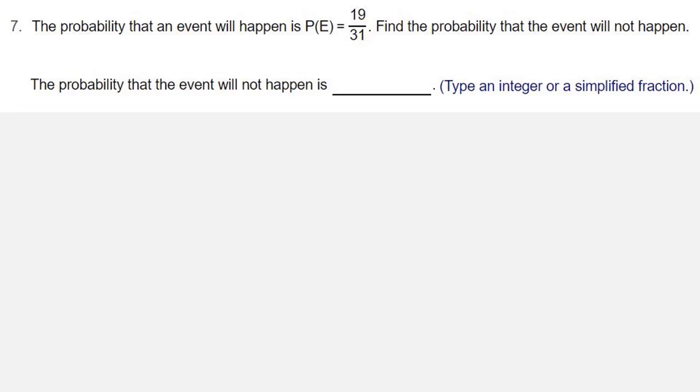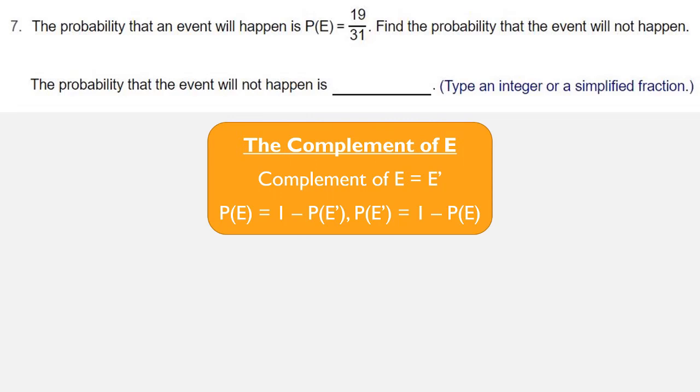So, let's review the definition of the complement of E. The complement of E equals E prime. The probability of E is equal to 1 minus the probability of E prime, and the probability of E prime is 1 minus the probability of E.